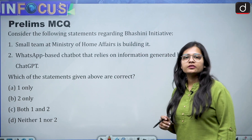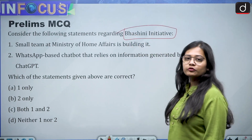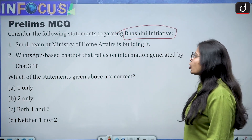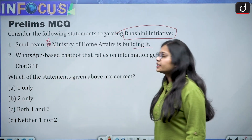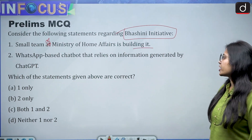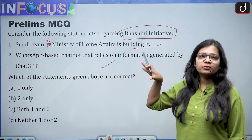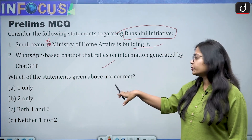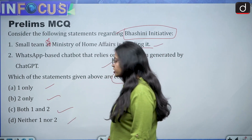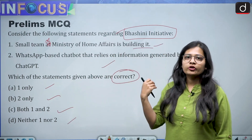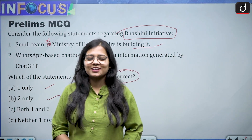The last aspect is the prelims MCQ — give your answer in the comment section. The question says: consider the following statements regarding the Bhashini initiative. Statement one: a small team of the Ministry of Home Affairs is building this initiative. Statement two: it is a WhatsApp-based chatbot that relies on information generated by ChatGPT. Which of the statements are correct? Options: one only, two only, both one and two, or neither one nor two. Try to solve and comment your answer. That's all for today — thank you for watching. Keep reading and keep writing.